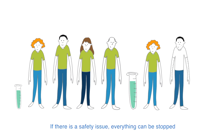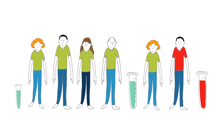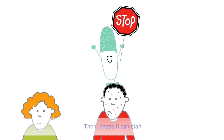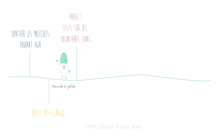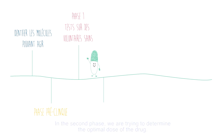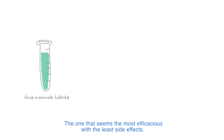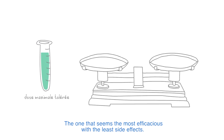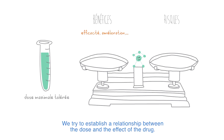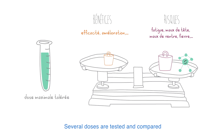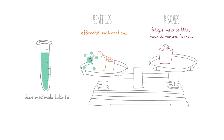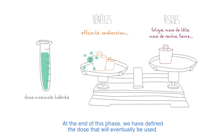Then phase two can start. In the second phase, we are trying to determine the optimal dose of the drug — the one that seems the most efficacious with the least side effects. We are trying to establish a relationship between the dose and the effect of the drug. Several doses are tested and compared. At the end of this phase, we have defined the dose that will eventually be used.